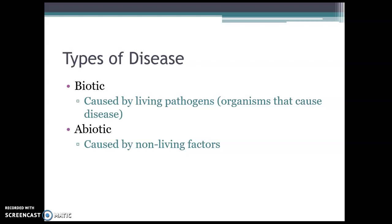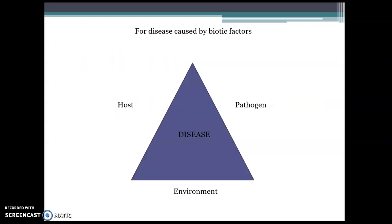Even hailstorms can cause a type of abiotic disease. For biotic factors — living things — a disease needs three things. This is the disease triangle. To have disease, you need a host plant or cannabis plant, you need a pathogen — a disease-causing organism — and you need the right environment. Without one of those three factors, we don't have disease.